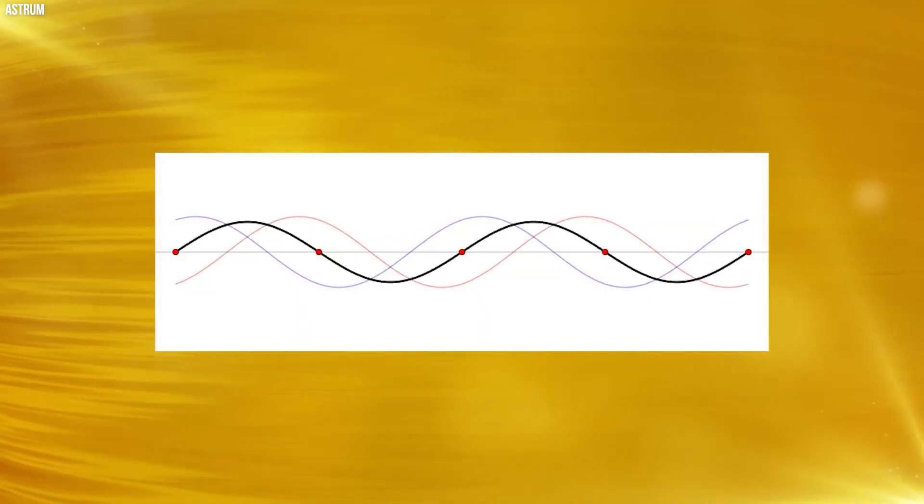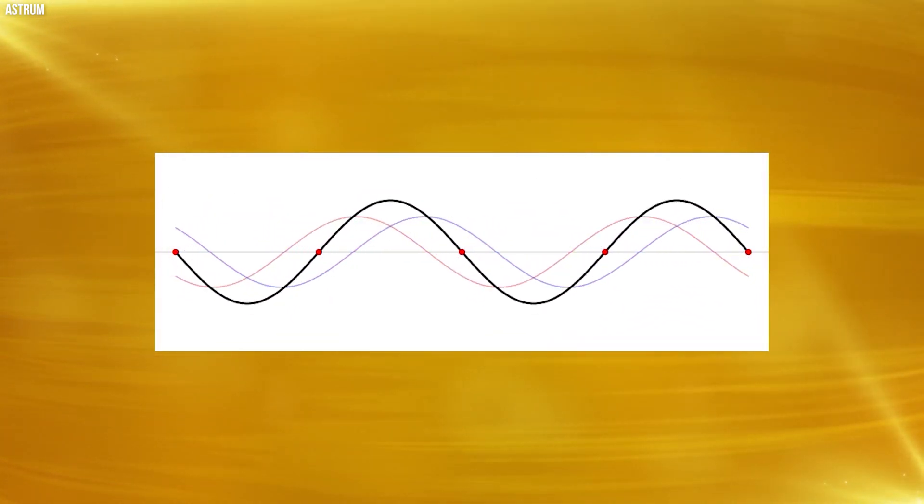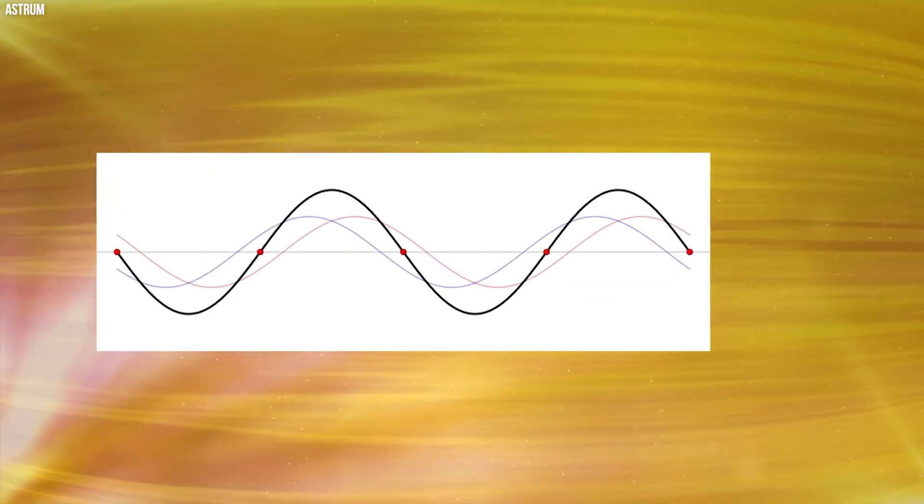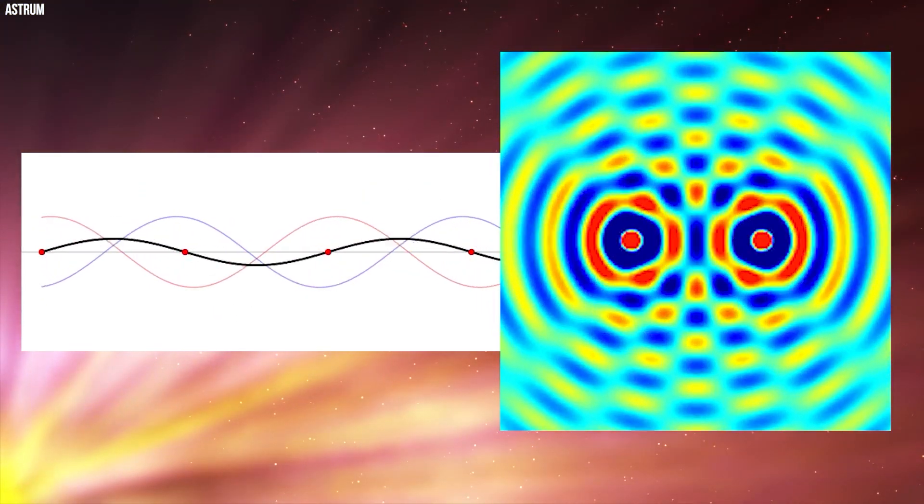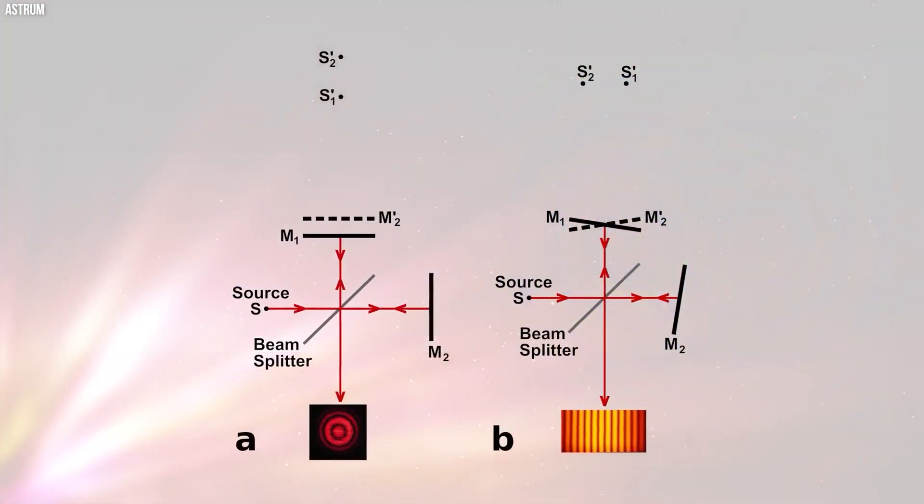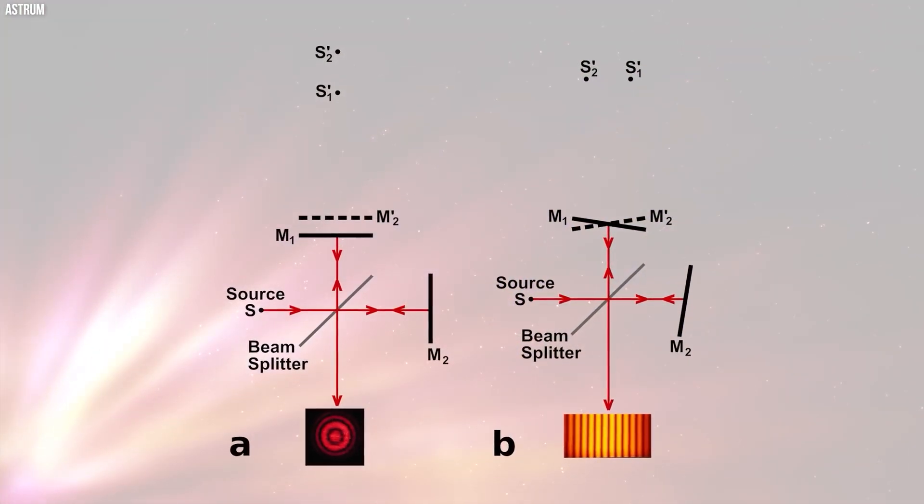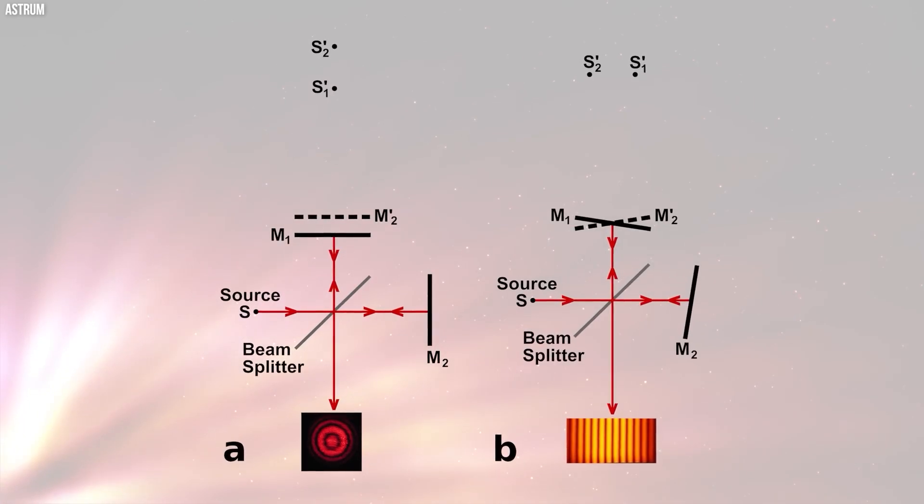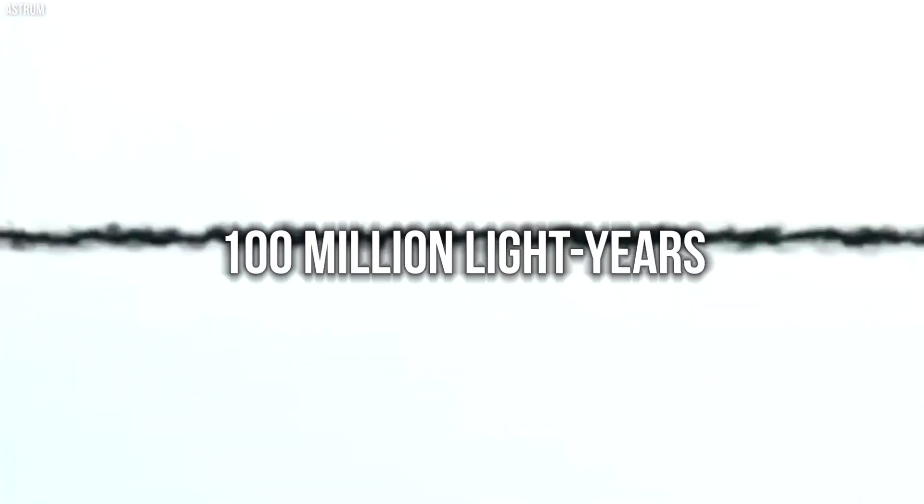There's also a slim possibility that a minute portion of the gravitational wave signal detected by that pulsar timing array, spanning the size of the Milky Way, originates from gravitational waves generated at the inception of the Big Bang. These waves could have wavelengths ranging from the size of the Milky Way, around 100,000 light-years, to the size of the Virgo supercluster of galaxies, around 100 million light-years.